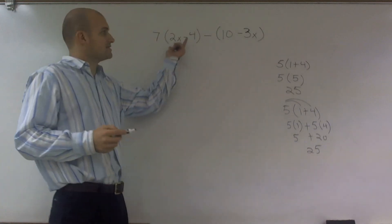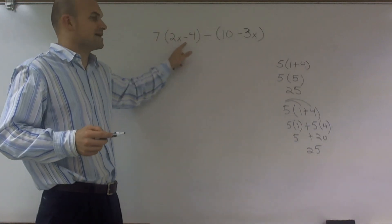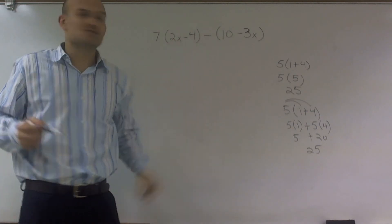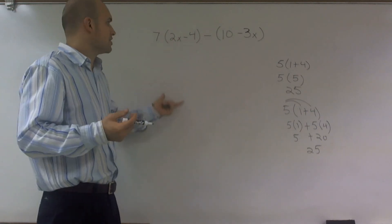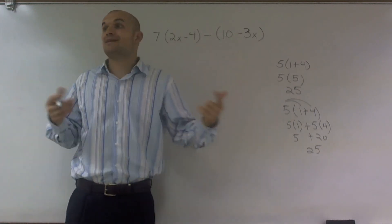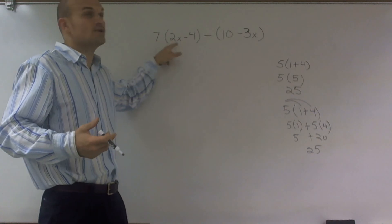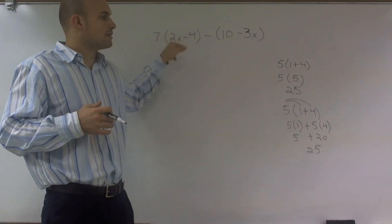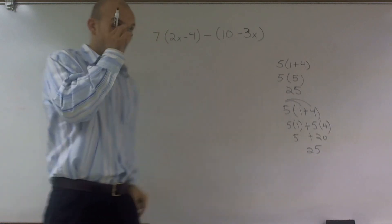Here, if you look at these, these are not like terms. This is 2x and this is negative 4. You can't combine 2x minus 4 because you don't know the value of x. The answer is definitely not negative 4 or negative 2 or negative 2x. We can't combine them. However, we can use the distributive property to help us simplify it.